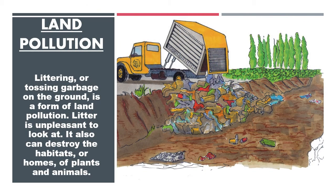Land pollution. Littering, or tossing garbage on the ground, is a form of land pollution. Litter is unpleasant to look at, and it can also destroy the habitats or homes of plants and animals.